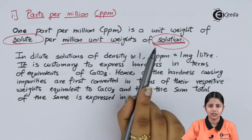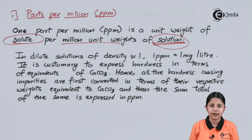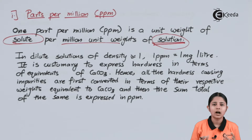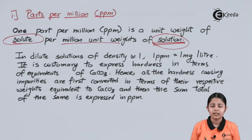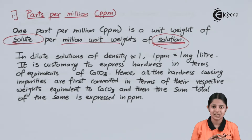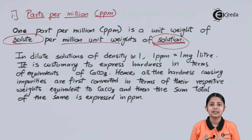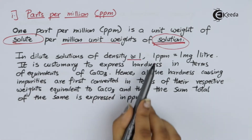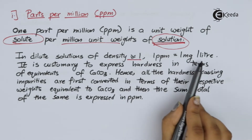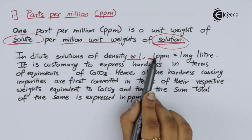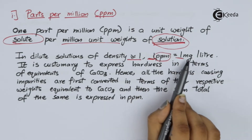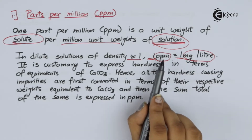The solution here is water plus other reagents. For example, if I have to find the PPM value of Ca+ ions in a hard water sample containing calcium carbonate and magnesium chloride, the entire solution will have ions of calcium and magnesium. On the numerator I will only take calcium — the solute — but in the denominator I will take the entire solution: water plus all other ions of magnesium and all other salts present. In dilute solution of density approximately equal to 1, 1 PPM equals 1 mg per liter.